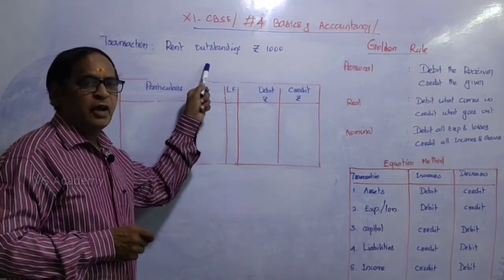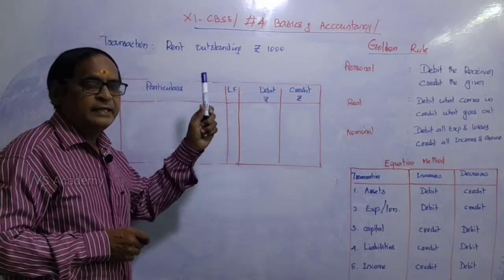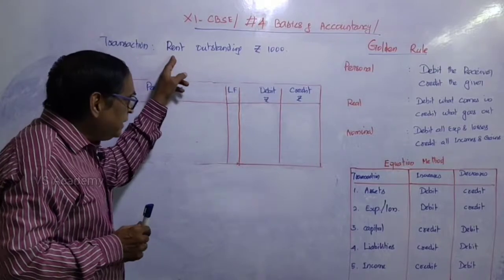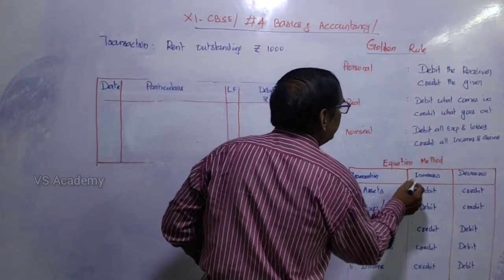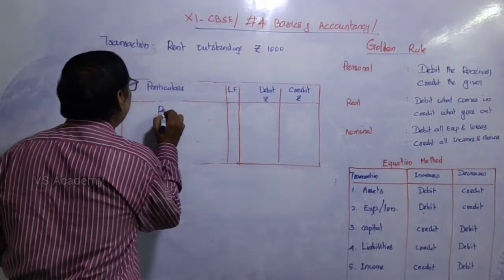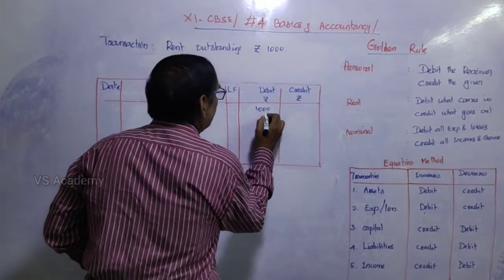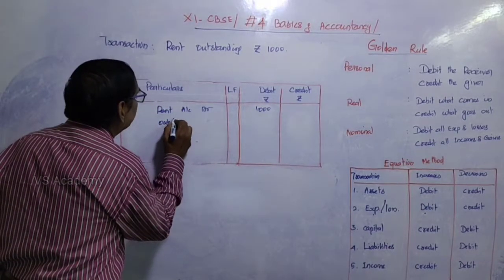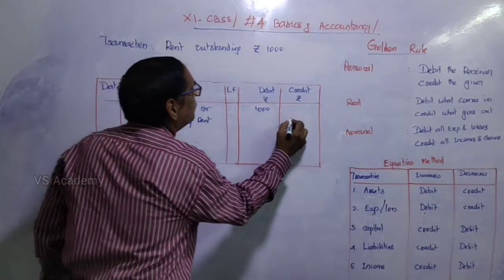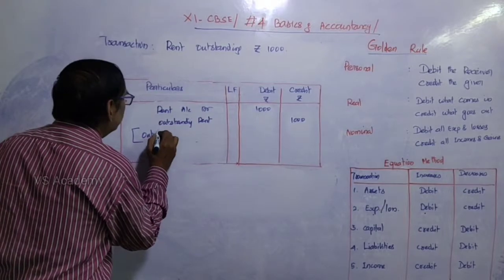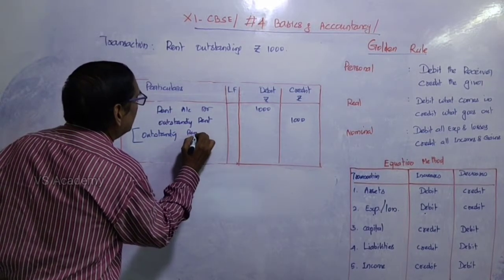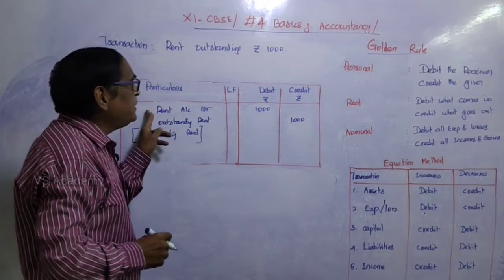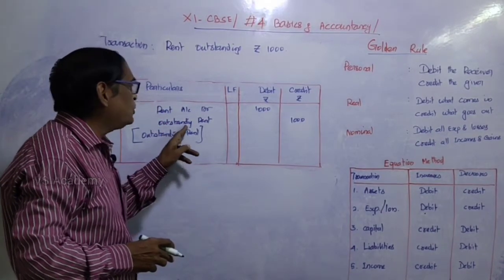Next: rent outstanding — meaning we have not yet paid the rent, so it remains a liability. Two effects: rent is an expense, and outstanding rent is a liability. Increase in expense is debited — so rent account is debited ₹1,000. Outstanding rent is a liability; if liability increases, it should be credited — so outstanding rent account is credited ₹1,000. Under the golden rule, rent falls under nominal account (debit all expenses), and outstanding rent falls under representative personal account (credit the giver).